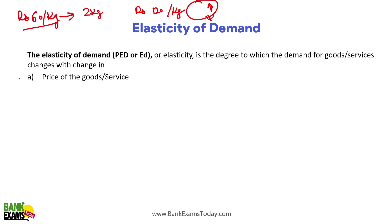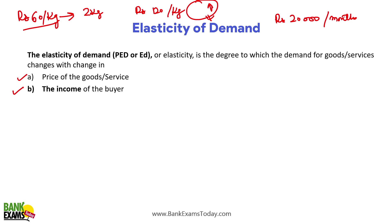The elasticity of demand is the degree to which demand for goods and services changes with the change in price. Price is not the only factor — income of the buyer can be another factor. Let's assume your family income is Rs. 20,000 per month and you are using refined cooking oil. But if your family income goes to Rs. 50,000, your refined oil consumption will be less and you are going to use more butter or more olive oil.